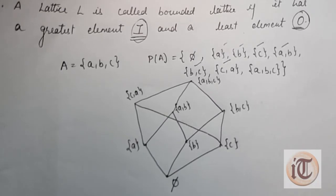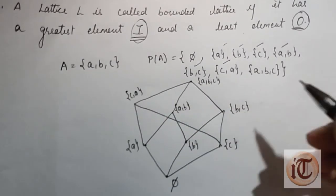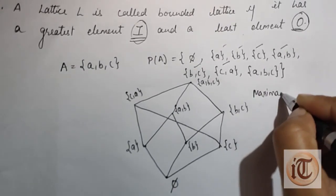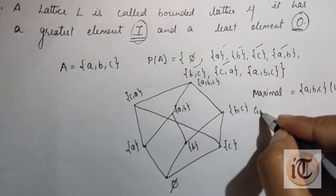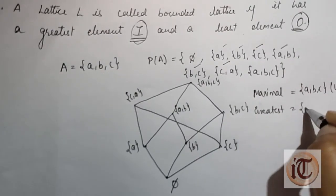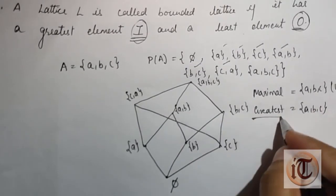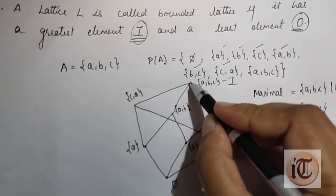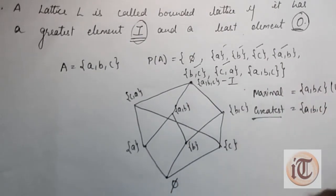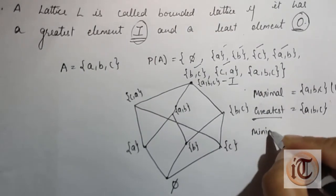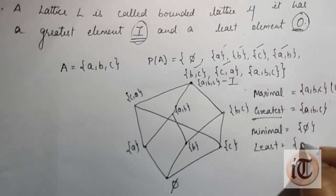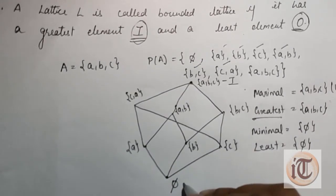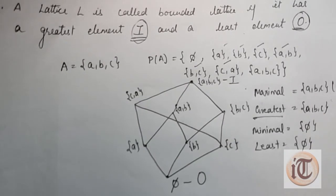For this Hasse diagram, what is the greatest element or the maximum element? The maximum element is the top element of the Hasse diagram — {a,b,c} — and since it is a unique element it is also the greatest element, represented by i. The minimal element is at the bottom of the Hasse diagram, that is phi. Since it is a unique element, we represent phi as o.